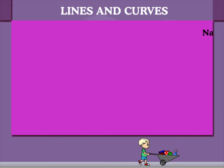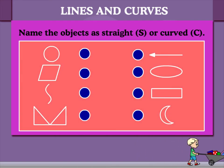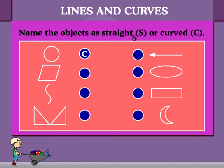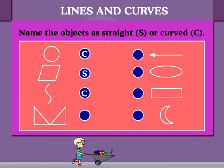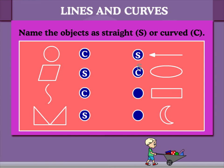Here are some shapes. Let's sort them on the basis of straight lines and curved lines. Circle: curved. Rectangle: straight. Free figure: curved. Two triangles: straight. Arrow: straight. Oval: curved. Rectangle: straight and moon: curved.